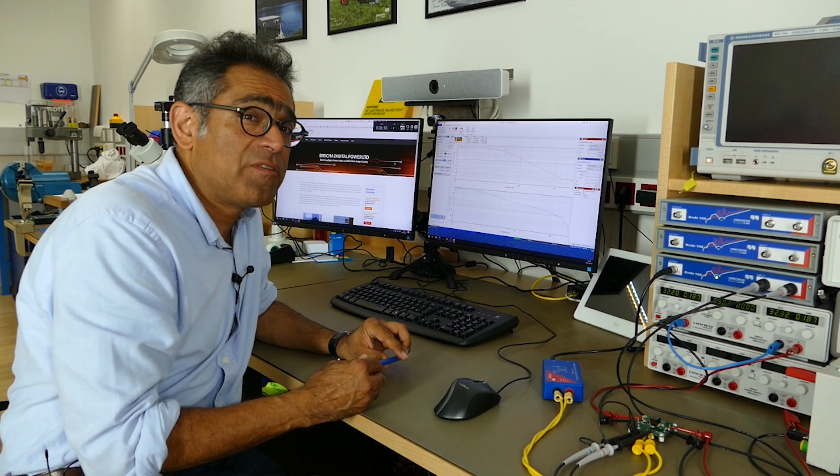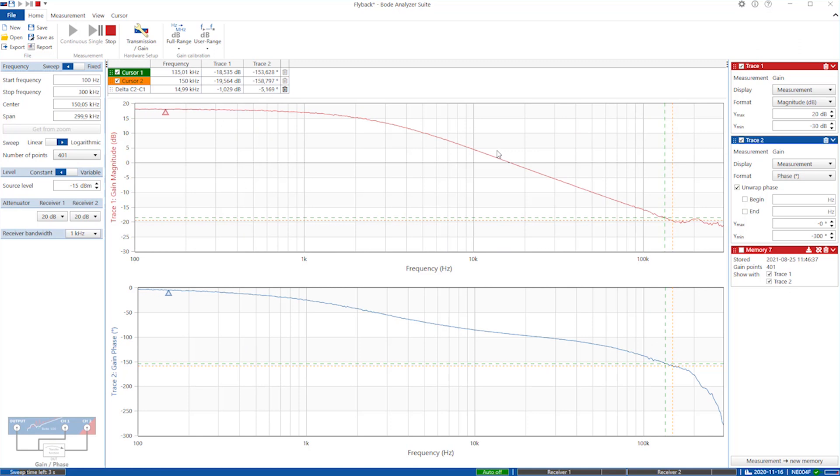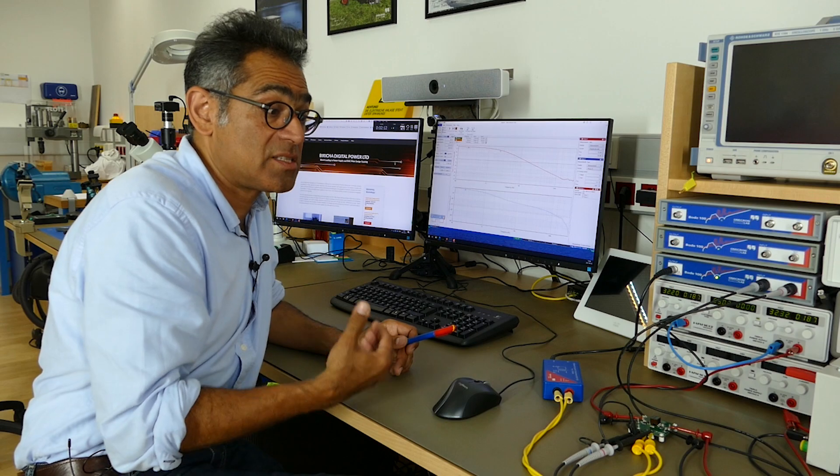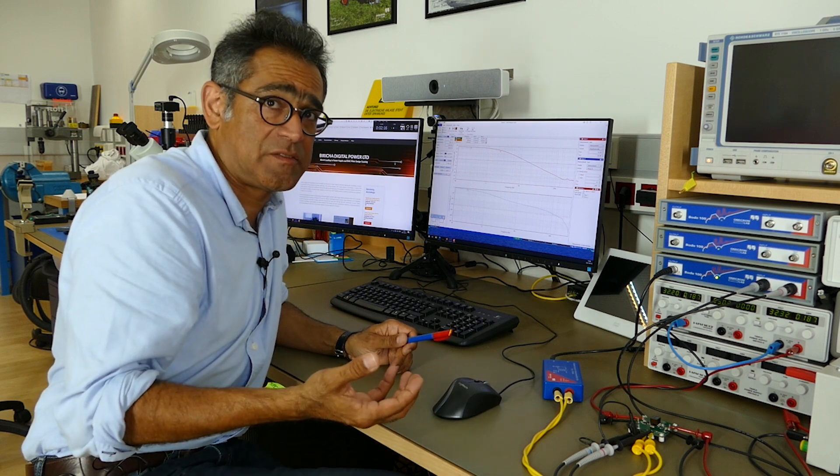Now this causes a problem if you use voltage mode control. The reason for that is that you need to cross a decade lower than the right-hand plane zero, but on voltage mode control you usually have a resonant bump around here. Now the resonant bump causes 180 degrees of phase loss. Then if you're too close to right-hand plane zero, on top of it you've got another 90 degrees of phase loss, which will make it very difficult to stabilize.